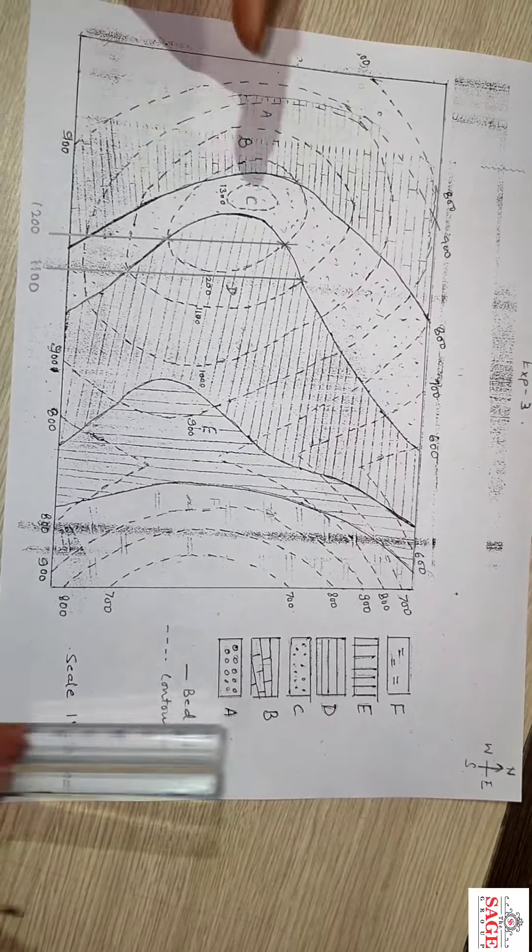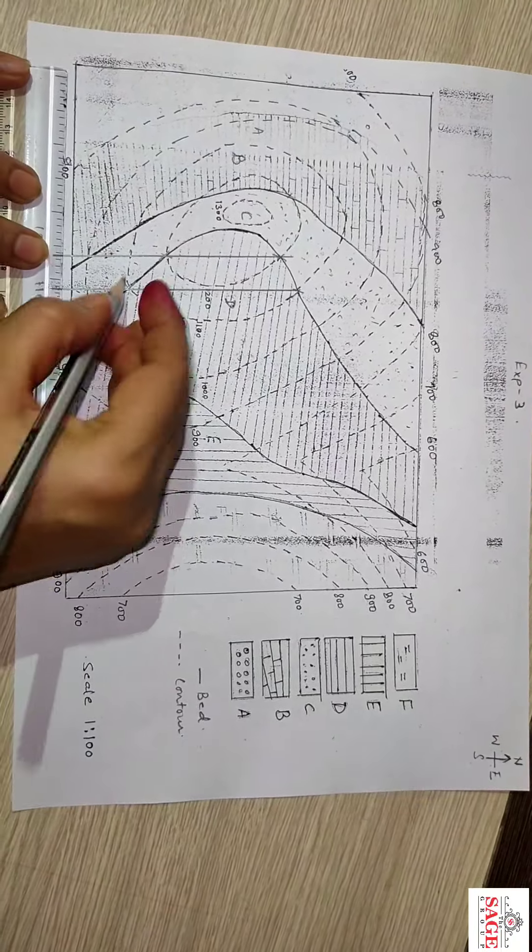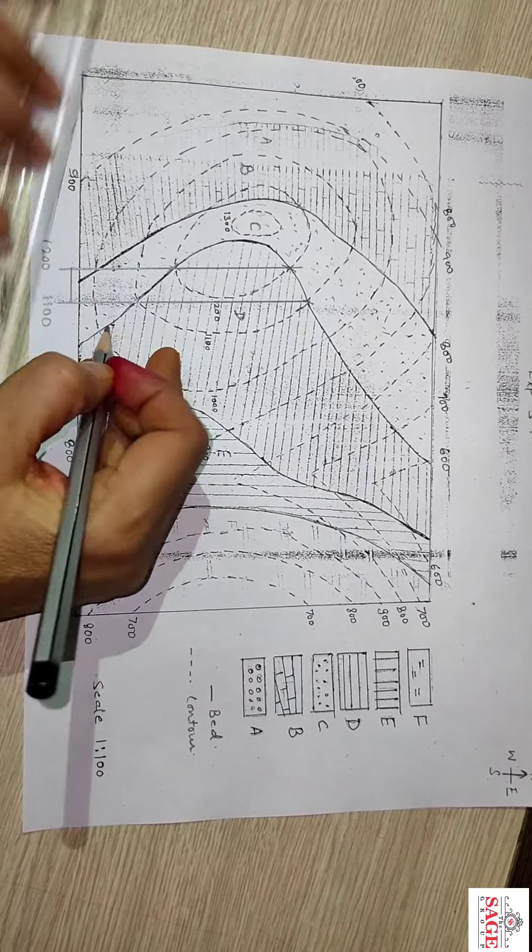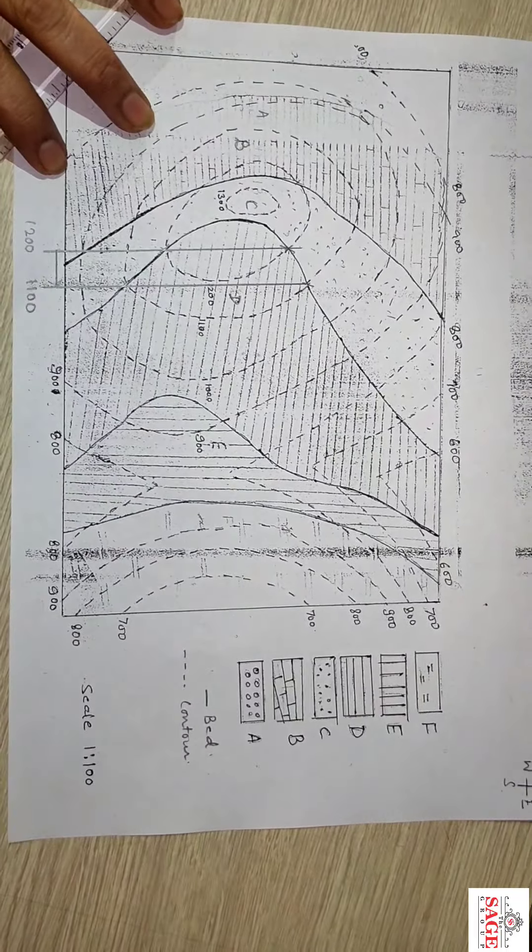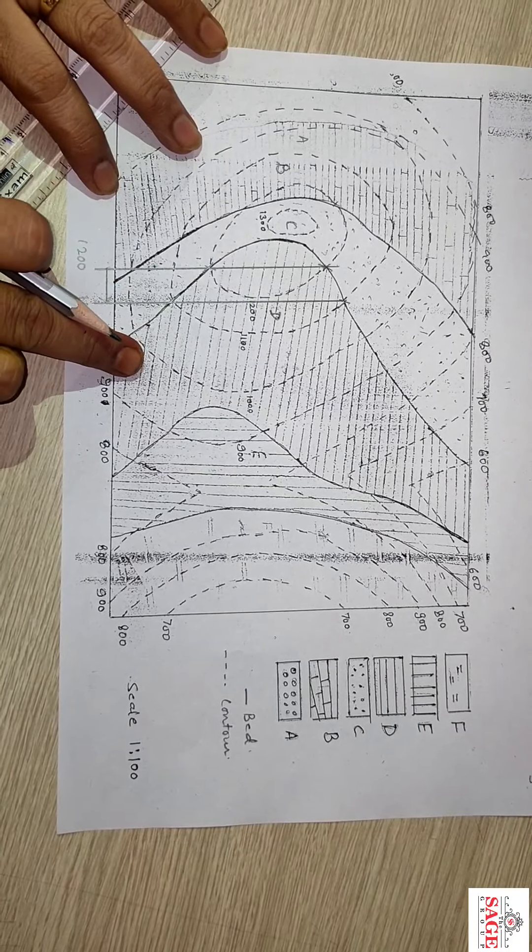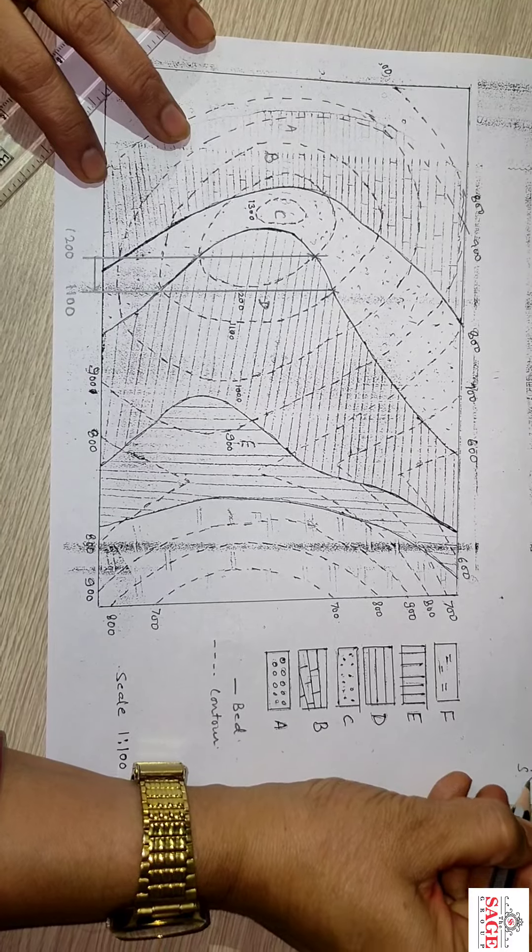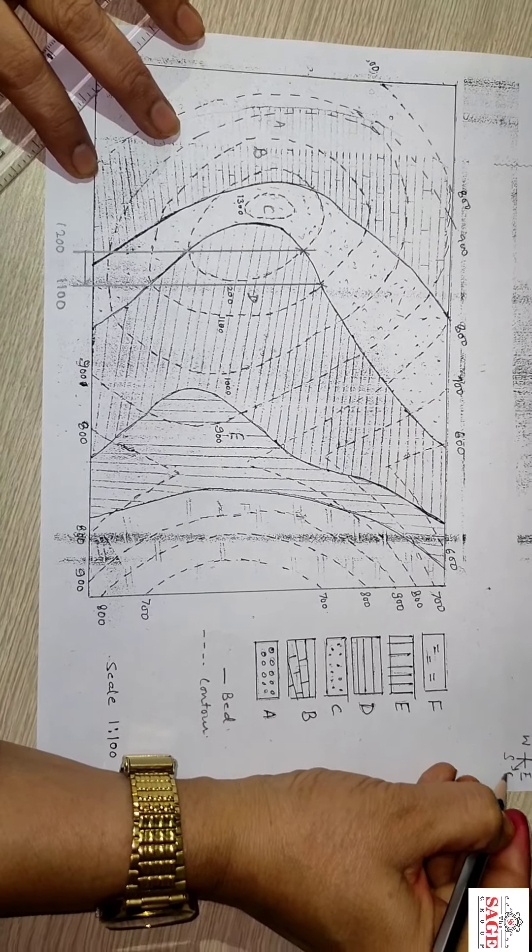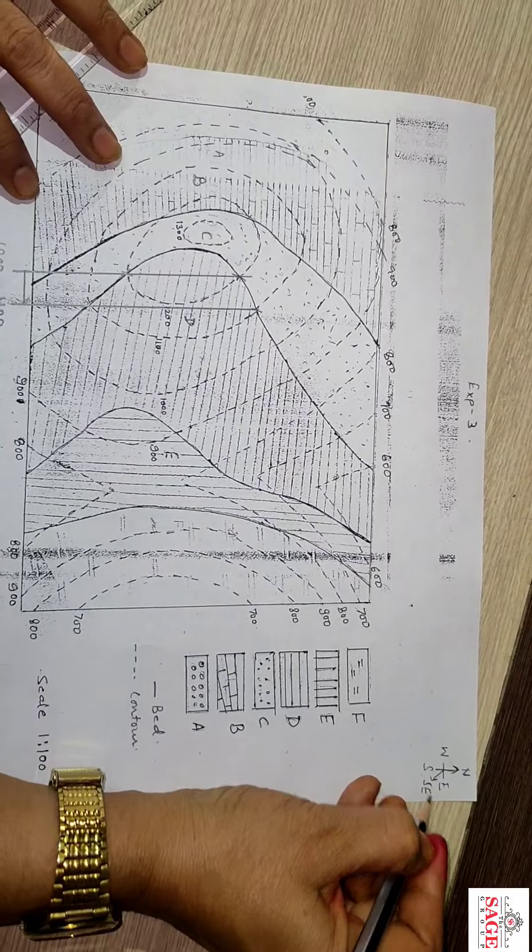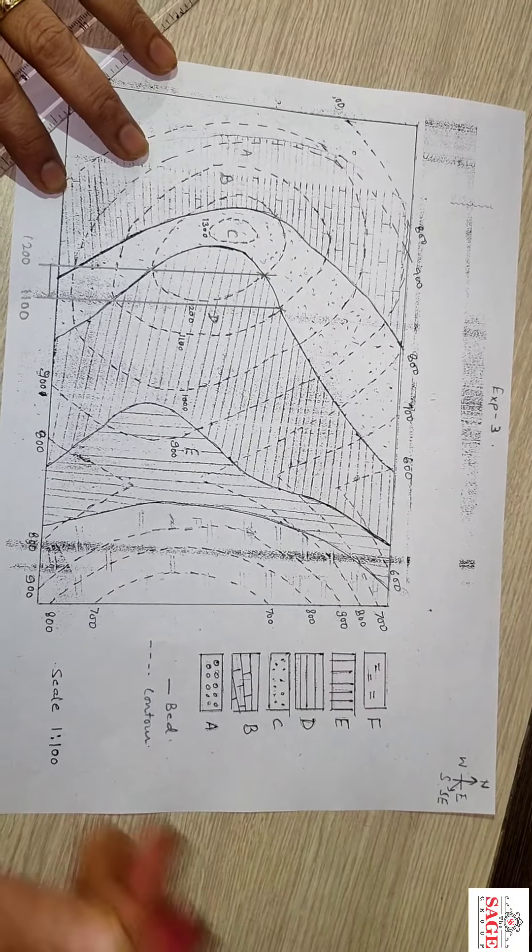You can see here the slope is going towards the eastward side. You have to mark it and set the direction. I think in this map, the inclination of bed towards this side, that means south east. So these all beds are inclined towards the south east.